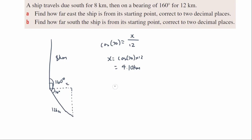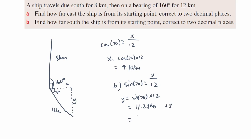Part B — how far south has the ship traveled? The opposite side over hypotenuse: sin 70 equals y over 12, so y equals sin 70 times 12, giving 11.28 kilometers. I need to add the initial 8 kilometers south: 11.28 plus 8 equals 19.28 kilometers. The ship is 19.28 kilometers south from its starting point.